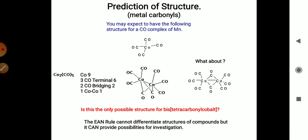This is another example, Co2(CO)8. It will also obey the 18 electron rule. 9 electrons in the Co metal and 3 terminal bonds which give total 6 electrons, and 2 bridge bonds which give 2 each, and 1 Co-Co bond will give 1 electron.